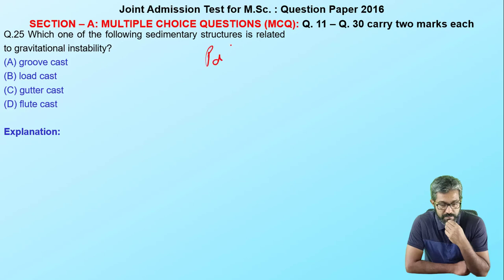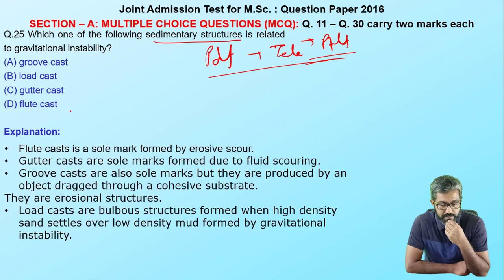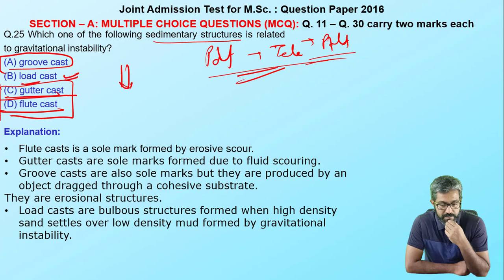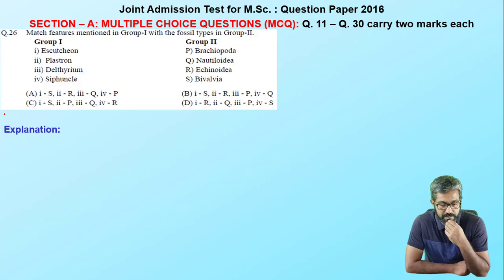Moving to sedimentary structures — I have already shared the PDF in my Telegram group. Flute casts, grooves, and gutter casts are all erosional features. Load structures, as the name suggests, are formed by load — if there is a load, there is a role of gravity, meaning gravitational instability is involved. So my option is B.